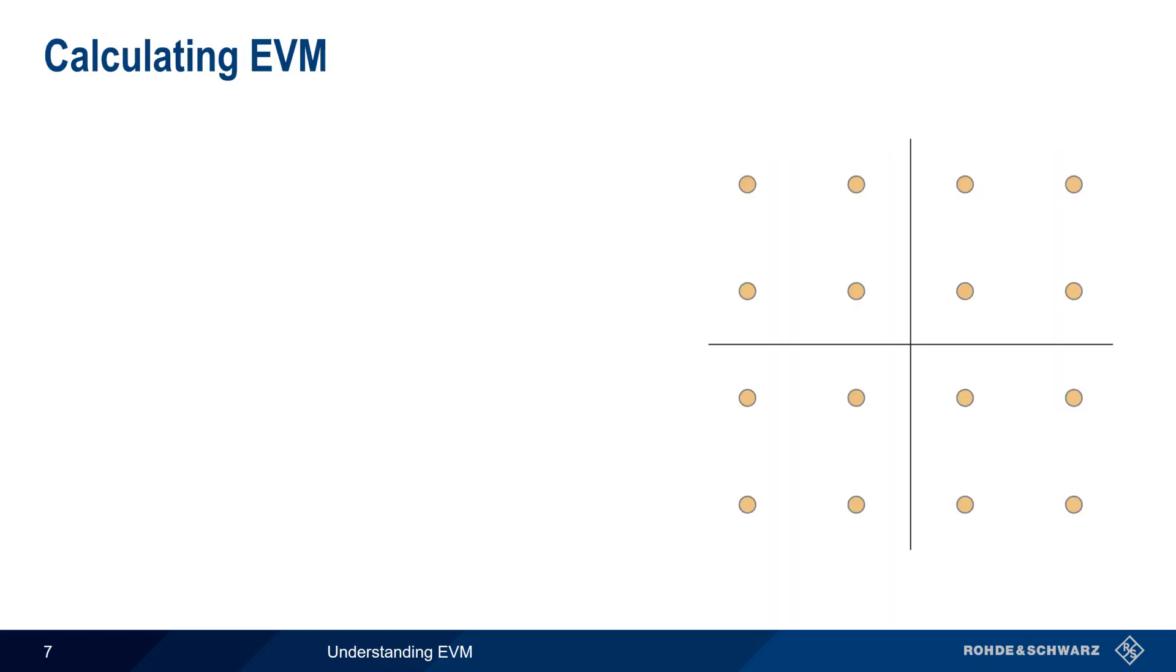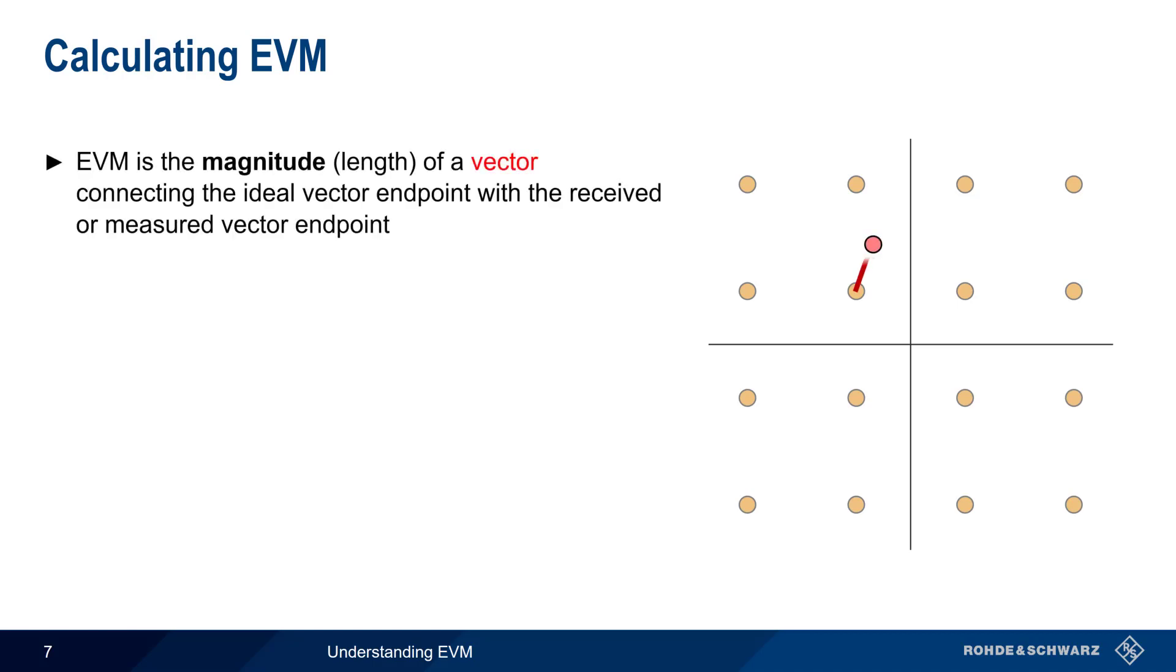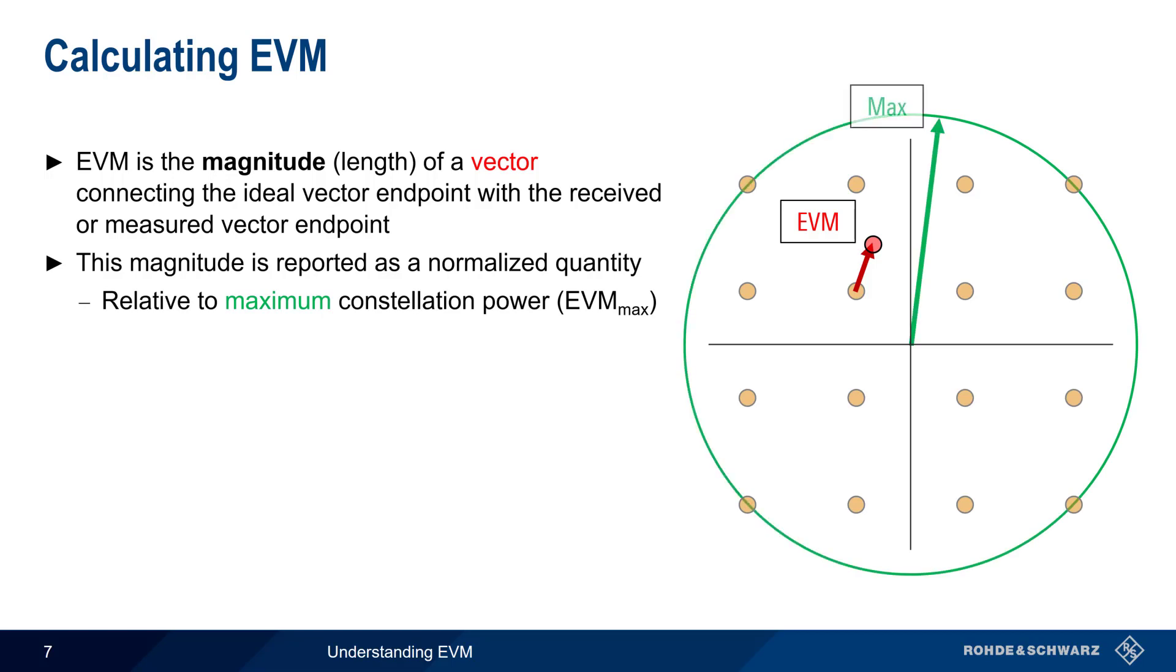So how do we calculate EVM? Recall that EVM is the magnitude or length of a vector connecting the ideal or reference point with the received or measured point. In EVM measurements, the magnitude or length of this vector can be reported in two different ways. The first is relative to the maximum power in the constellation, and the second is relative to the RMS or root mean square power of the constellation. In other words, we calculate and report EVM by comparing the length of the red vector to the length of either the green vector or the length of the blue vector.